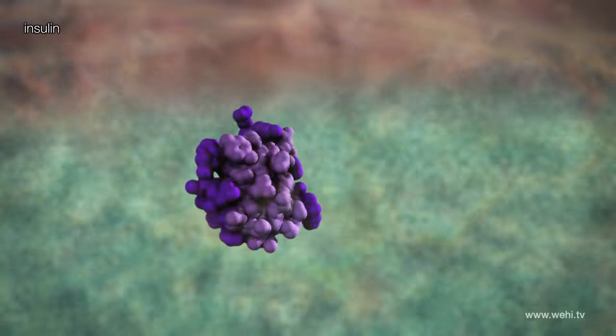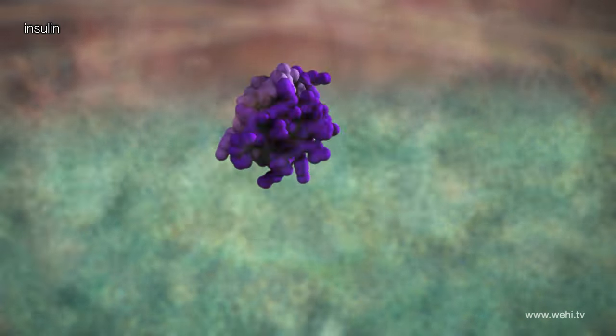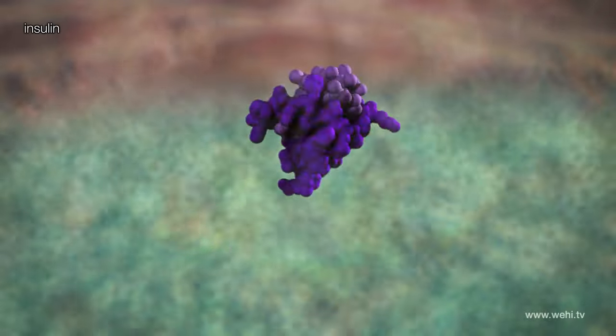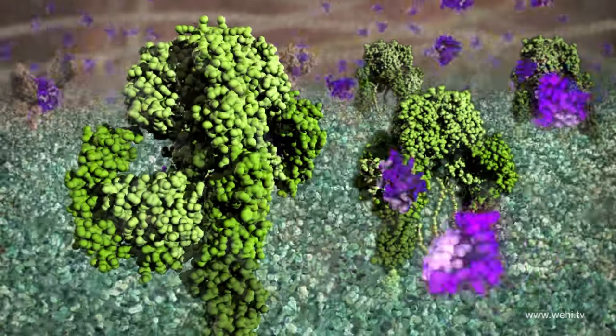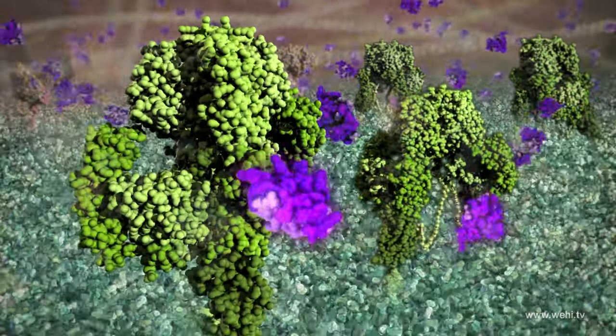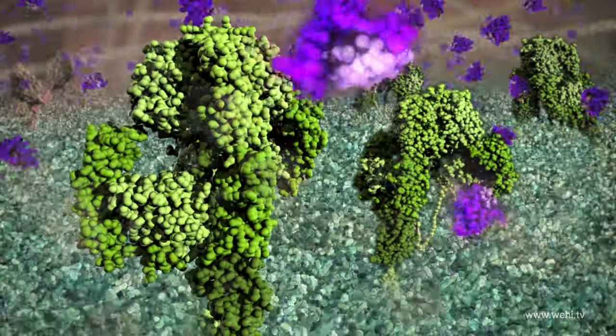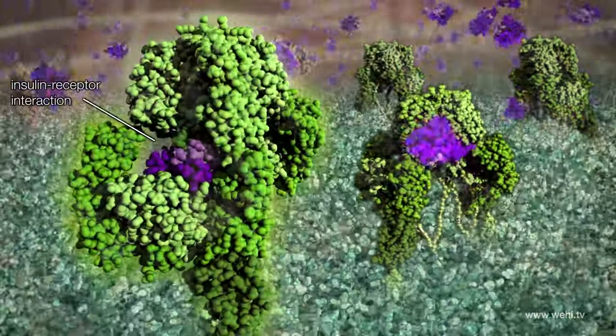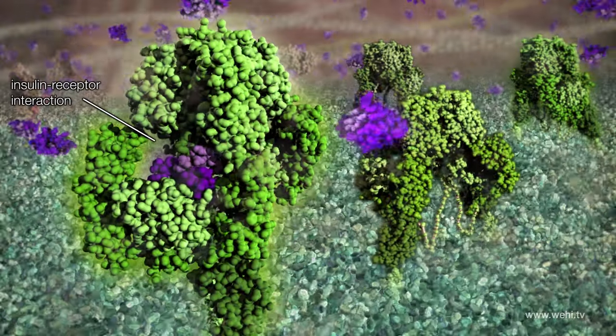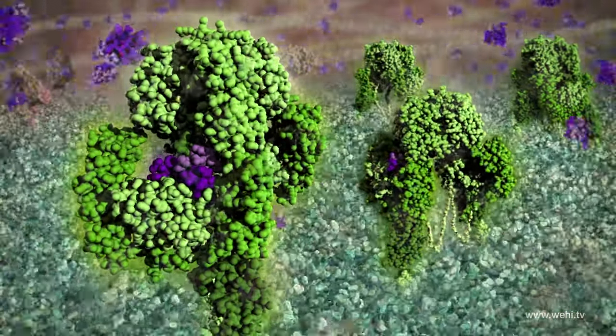Insulin is a small molecule whose structure was determined a long time ago in 1969, but it's been unknown how it interacts with the receptor and that is what we have discovered. Its interaction I've characterized as a molecular handshake as the two proteins dock together.